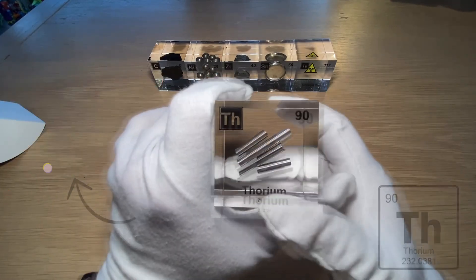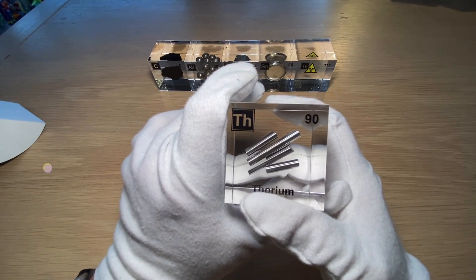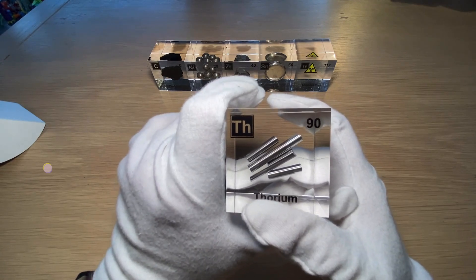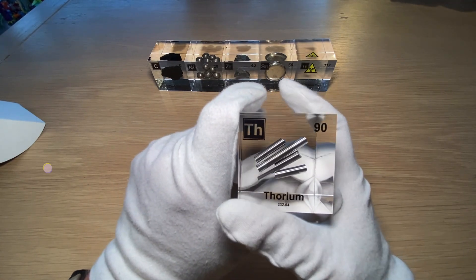Now what can we tell about this? Well, first of all, it's 90 protons and 90 electrons. It also is radioactive. Now, will that mean that if I hold this for too long my hands will fall off? No, far from.